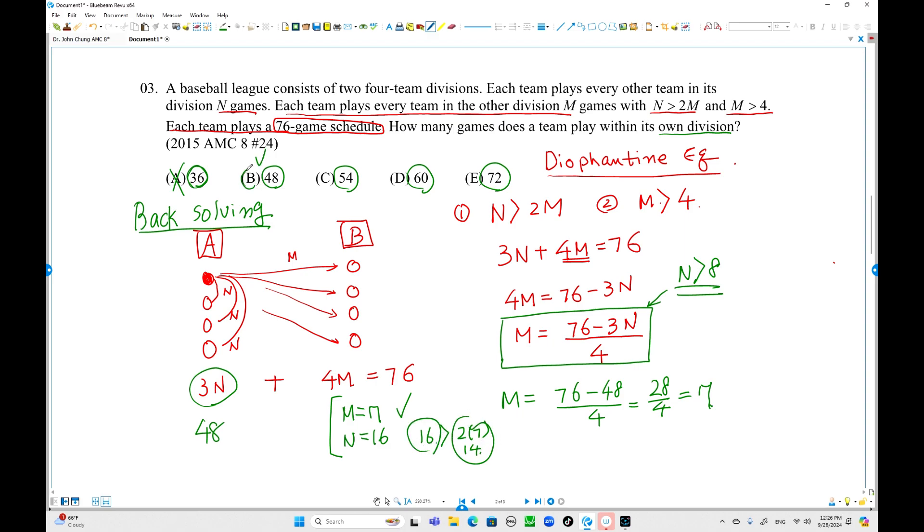Choice B is the answer. That's a good idea because the options are given. If not, you can try N equals 9 or 10 until you find the correct answer. You have to check this constraint again. I think back-solving is better, more comfortable. Try to use back-solving after you set up the equation.